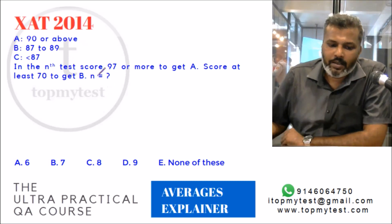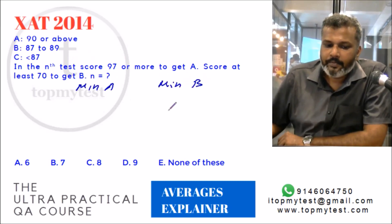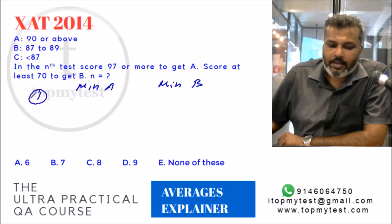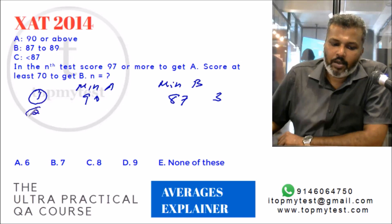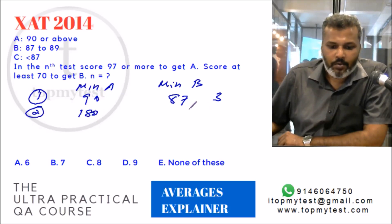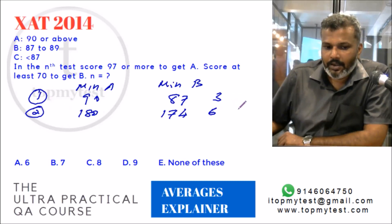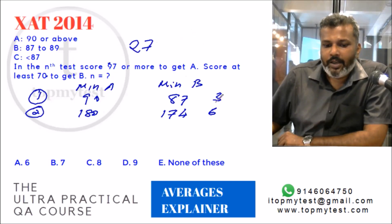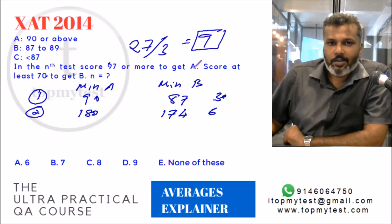How many quizzes did the professor take? Look at the minimum requirement for A and for B. For 1 quiz the minimum for A is 90, minimum for B is 87 — difference is 3. For 2 quizzes the totals are 180 vs 174 — difference is 6. So for every additional quiz the difference increases by 3. The difference between 97 and 70 is 27, and 27 ÷ 3 = 9, so there are 9 quizzes.